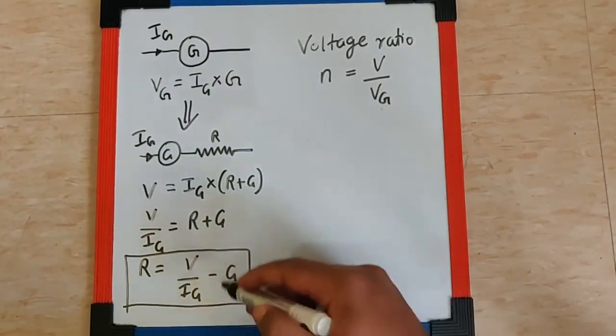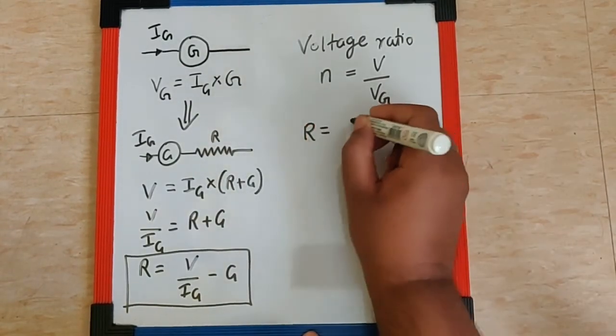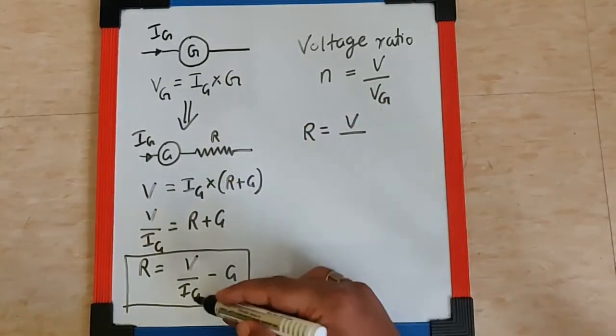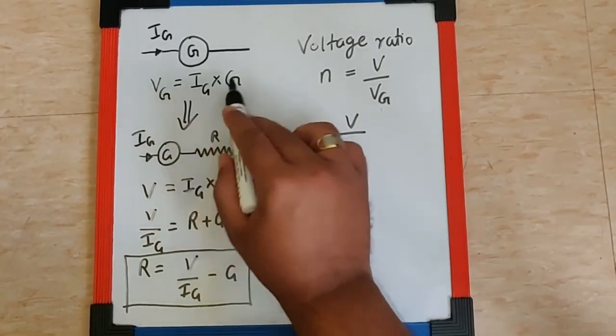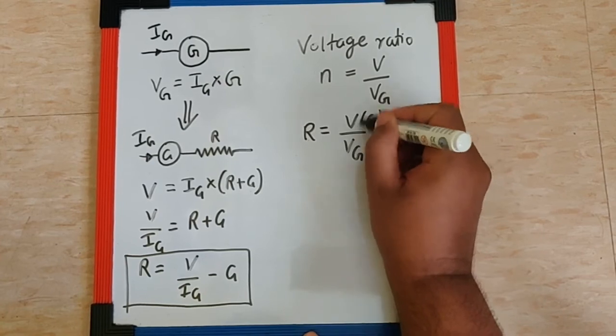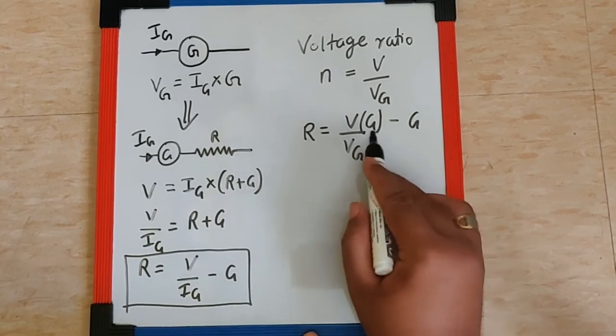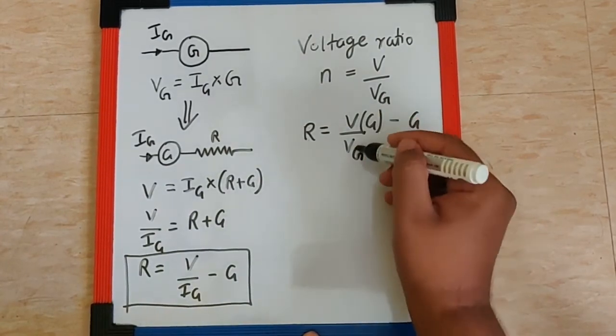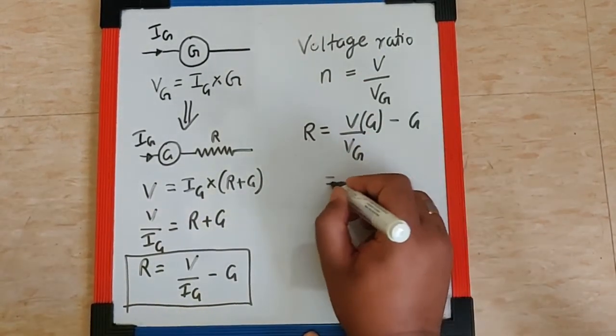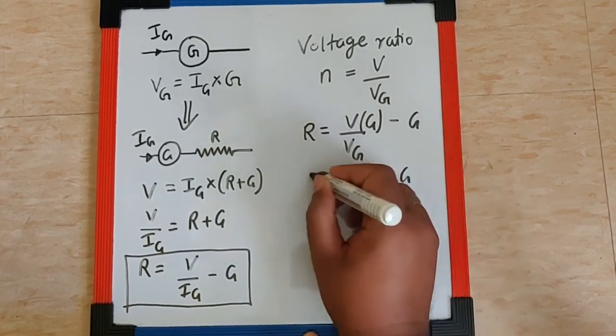we can use it in this formula to simplify it. R can be written as V upon IG can be written as VG upon G. So VG upon G minus G. So IG is replaced as VG upon G. We can take G common and V by VG can be written as N. So we will have N minus 1 into G as R.